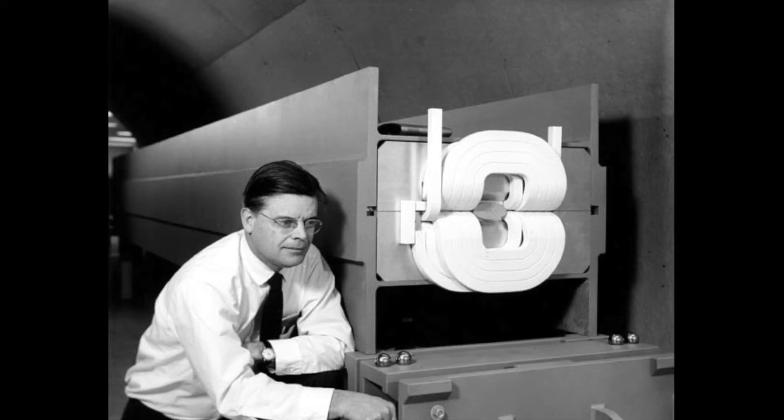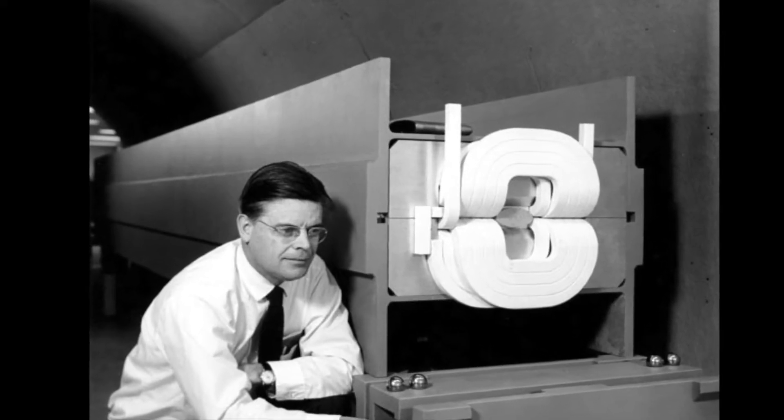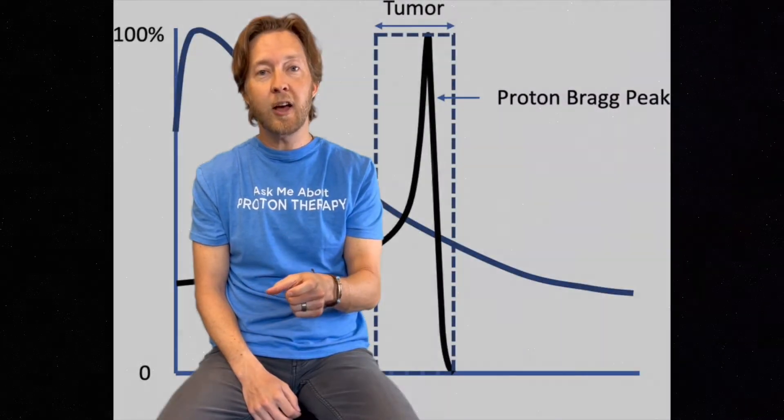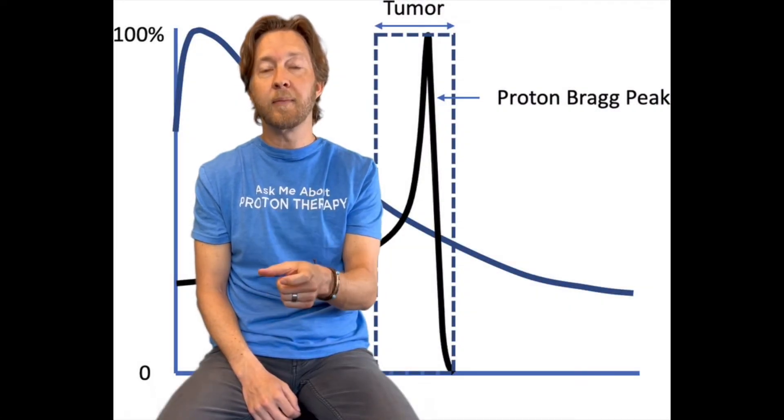In 1946, a physicist by the name of Dr. Robert Wilson published a paper called The Radiological Use of Fast Protons. In this paper, he described how high-speed beams of protons coming out of a particle accelerator could be targeted or shot at cancer cells, and when those protons hit the cancer cells, they would damage the DNA of those cells, thus either killing the cells or preventing them from replicating.